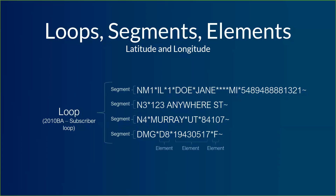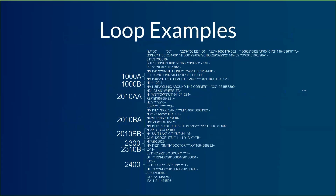Inside each segment, we also have data elements. These elements will trail out after the segment and provide all the detail that should be going inside that category. Let's take a look at those loops. This is the exact same example I showed on the other screen, except this time I've got the loop numbers next to the appropriate pieces of information. The loop numbers go numerically and alphabetically — so 1000A will be before 1000B, and 2300 will be before 2400.